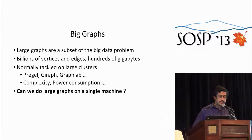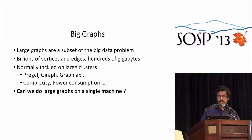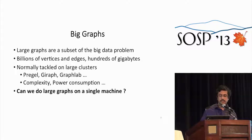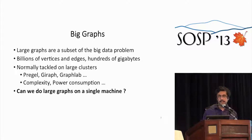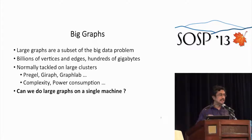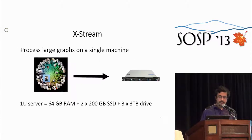Large graphs are a big data problem because they have billions of vertices and edges, normally amounting to hundreds of gigabytes of data. A normal way to tackle these is on large clusters — Pregel, Giraffe, GraphLab, or NIAID. But large clusters come with problems of complexity, management, and power consumption. So the question we asked is: can we do big graph processing on a single machine? And the answer is yes.